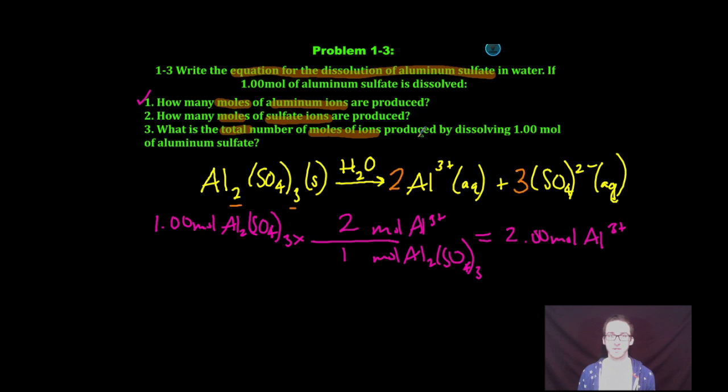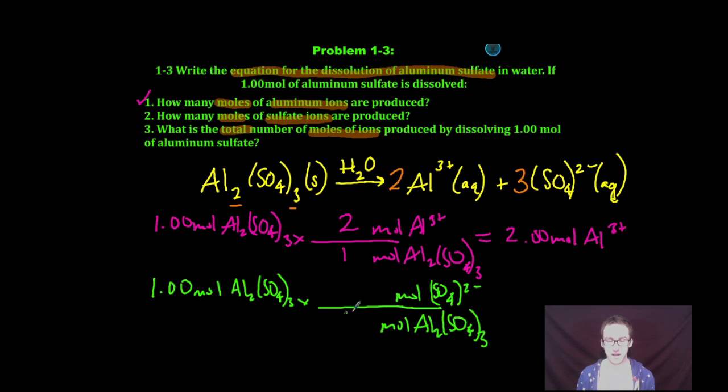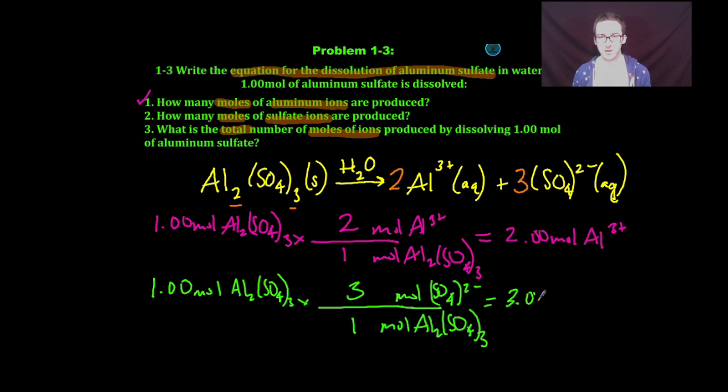Part 2, how many moles of sulfate ions? Again, I'm going to start with my 1.00 moles of aluminum sulfate, and I'm going to convert now to moles of sulfate. Notice that this time the ratio isn't 1 to 2, but for every 1 mole of aluminum sulfate, I'll get 3 moles of sulfate ions. So I'll make 3.00 moles of sulfate. Boom, question number 2, done.